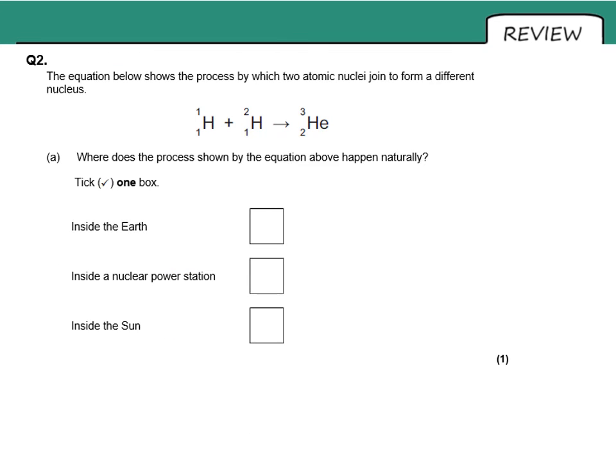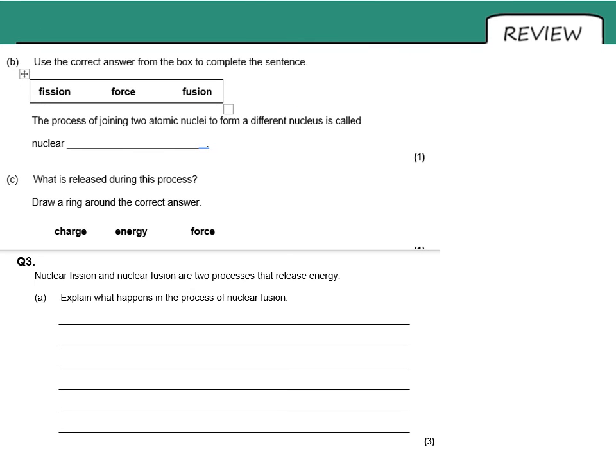Question two then, where does the process shown by this equation happen naturally? Well, of course, it happens inside the Sun. Part B, the process of joining two atomic nuclei to form a different one is called nuclear fusion. This releases energy.